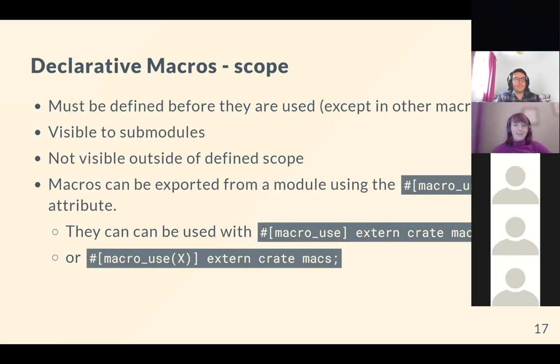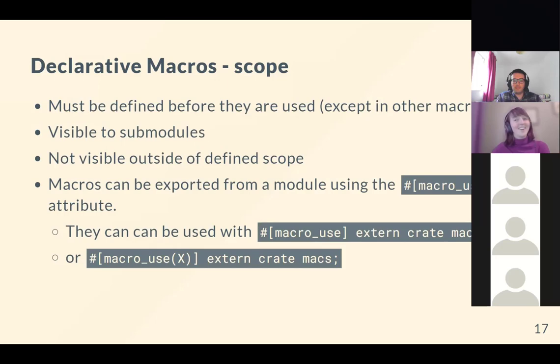One useful thing to mention about scope: a macro has to be defined before it's used — unlike functions in Rust, which can be placed anywhere in the file. Macros are visible to submodules but not outside their defined scope. They can be exported from a module using the macro_export attribute, which is itself a macro attribute, allowing them to be imported by other code.